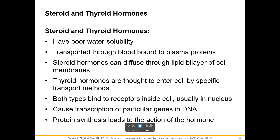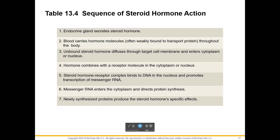Thyroid hormones are thought to enter by a protein transporter. Both steroids and thyroid hormones bind to receptors inside the cell. Steroids move through the cell membrane, through the nuclear membrane, and you'll find them in the nucleus — where the DNA is held, stored, and protected. Steroids and thyroid hormones are going to cause transcription of a specific gene in the DNA — turning on a gene — and you get a messenger RNA transcript, which a ribosome uses to make a new protein.